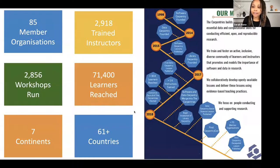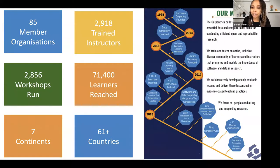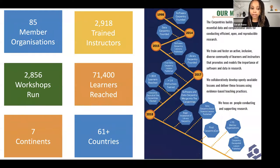The Carpentries is a non-profit and an umbrella organization comprised of three lesson programs: Software Carpentry, Data Carpentry, and Library Carpentry. To date, we have 85 member organizations — institutions and organizations that pay a fee, and in return are able to have Carpentries workshops run in their organizations. 2,918 instructors have been trained to date, and they have run over 2,800 workshops, reaching 71,400 learners. Before March 2020, these learners were primarily taught in in-person workshops, but since COVID happened, some of these numbers are from learners who have sat in online workshops. We've been to the seven continents and taught workshops in over 61 countries.